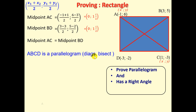The reason is that the diagonals bisect each other. So we've completed the first part. We now want to prove that it has a right angle — we're going to prove angle A is 90°. To do that, we know that if the product of the gradients of two lines is minus 1, then AB is perpendicular to AD.